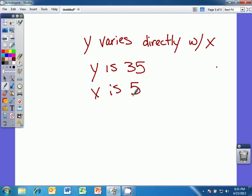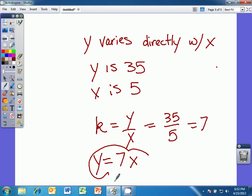It means that our k, our direct variation constant, is y over x. So in this case, it's 35 over 5, which is equal to 7. Now I can write a direct variation equation and that is y is equal to k, which we found was 7, times x. So I have my direct variation constant, 7, and I have my equation y equals 7x.